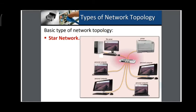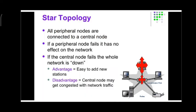Next is the star network. The hub or switch is placed right in the middle, and the wires are arranged in the form of a star. All peripheral nodes are connected to a central node — which is the switch or the hub. If a peripheral node fails, it has no effect on the network. However, if the centralized node — the hub or switch in the middle — fails, the whole network goes down.